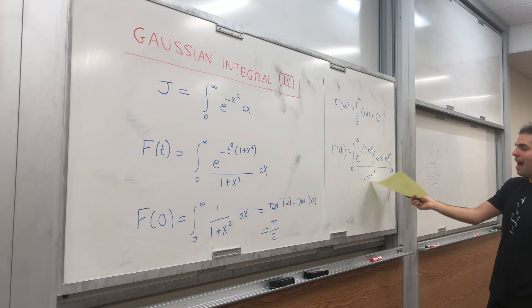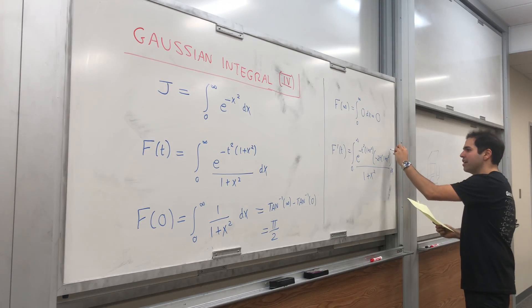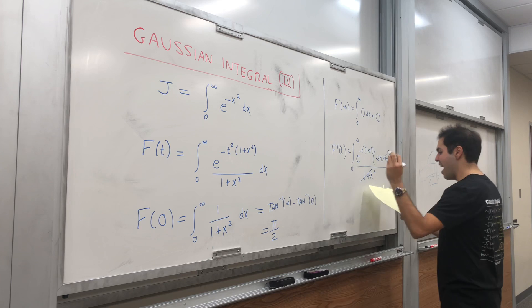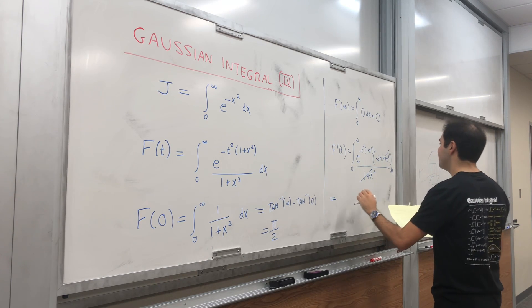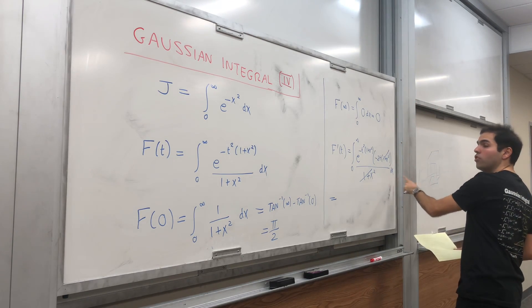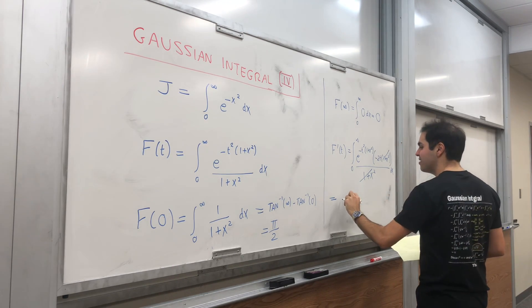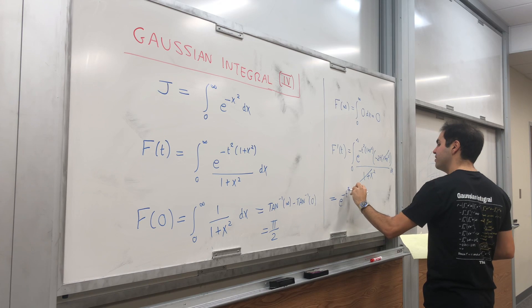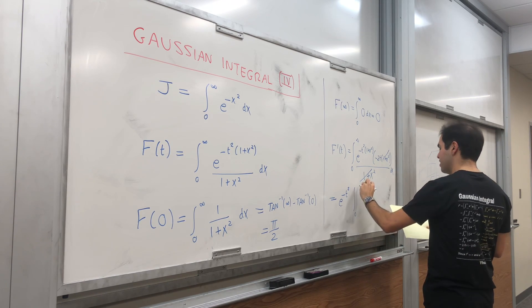The nice thing is this bad term, one plus x squared, it disappears. And then you're left with e of negative t squared, which just pulls out of the integral because it doesn't depend on x. So e of negative t squared, integral from zero to infinity.